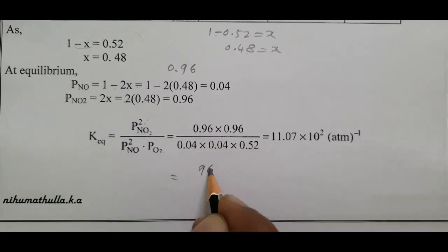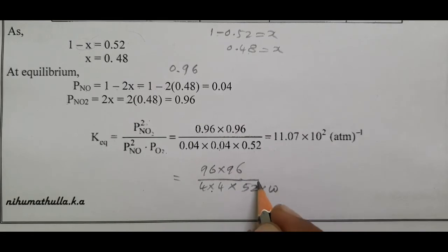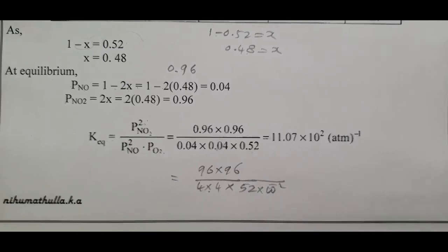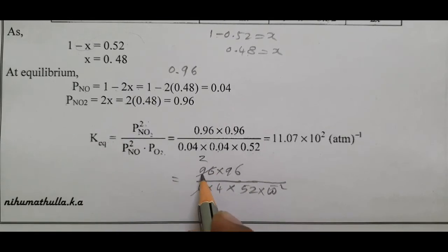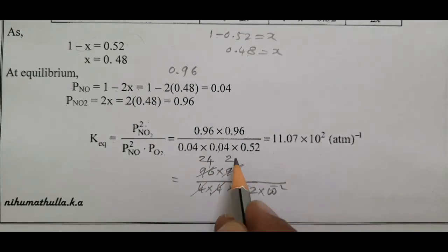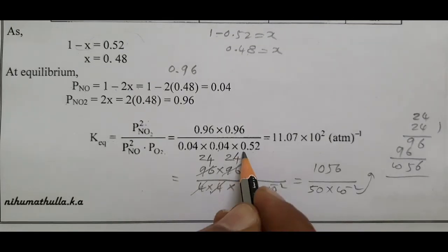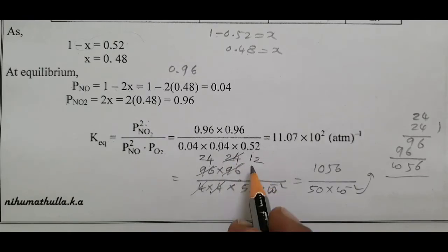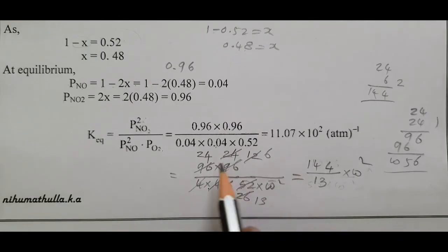Kp = (0.96)² × (0.96) divided by (0.04)² — that is 0.96³ divided by 0.04² × 0.52. Working through the arithmetic: numerator ≈ 0.96³, denominator ≈ 16 × 0.52. After cancellation, Kp ≈ 1/3 giving a value around 3.